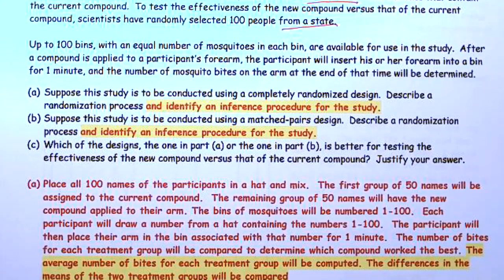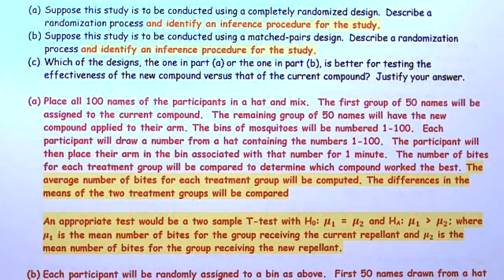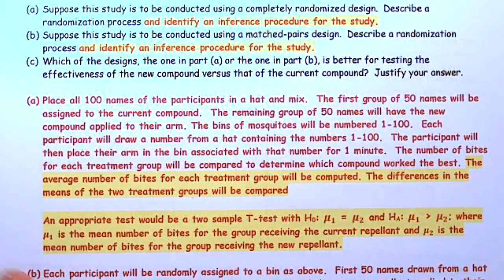Basically, I talked about the assignment and how you were assigned to the bin, then at the end of the time we compare the number of bites to determine which one was more effective. The parts highlighted in yellow involve an inference procedure that we'll cover second semester, so you don't need to write that down right now.